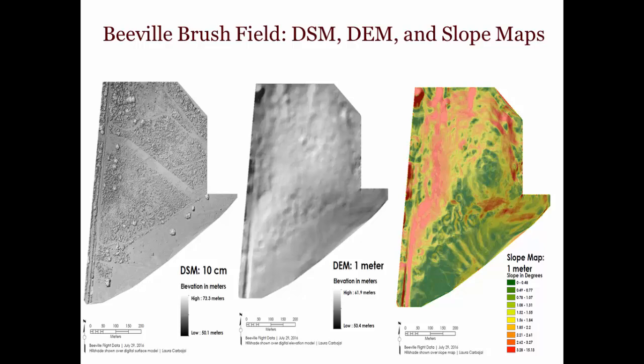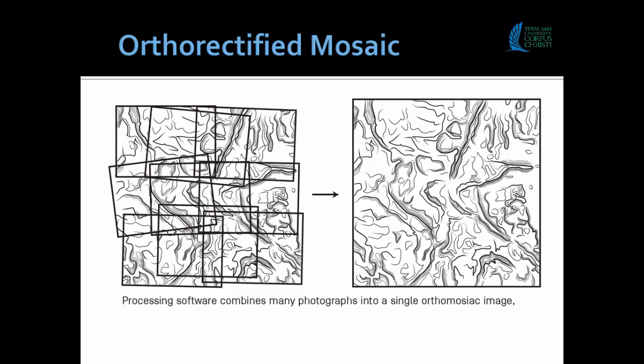As an example, here's Welder Wildlife Refuge — about 1,000 images stitched together to make one orthomosaic. We can go into GIS and look at different things, zooming in. This is about one-inch pixels — about one-inch ground sample distance — which is very high resolution for drone data.